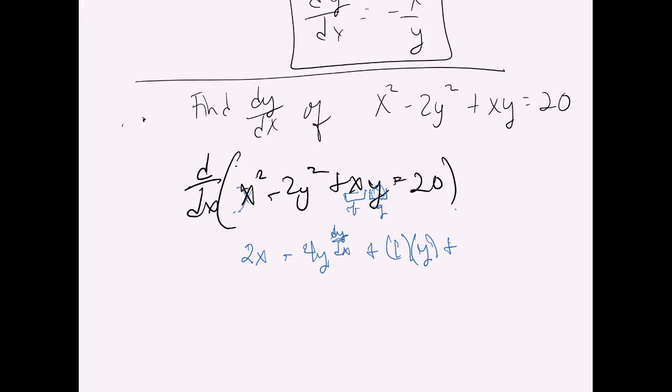Plus the derivative of the g function - so what's the derivative of y? Well it's a 1 dy/dx times the f, the original f function. And then that's going to equal 0.